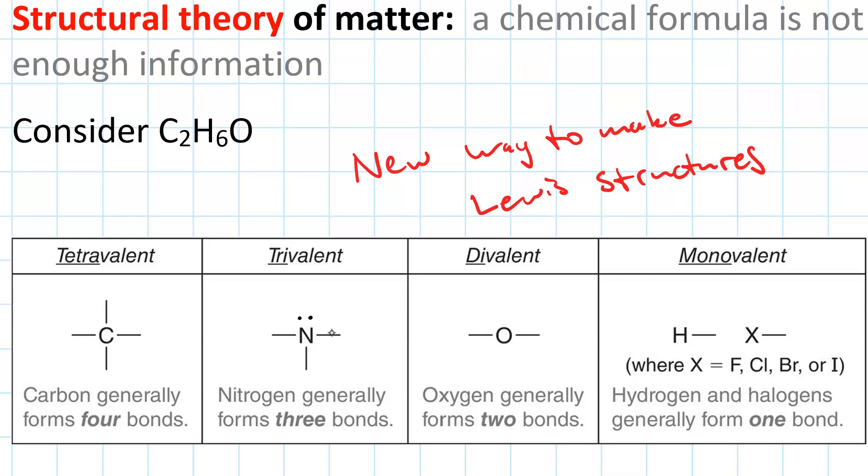Oxygen is divalent, meaning it forms two bonds: two singles or a double. Oxygen has two lone pairs.